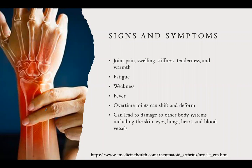Signs and symptoms include joint pain, swelling, stiffness, tenderness, and warmth to the touch. It's also associated with fatigue, weakness, and sometimes fever, since it is an autoimmune response. Over time, joints can shift and deform, causing pain because the bones are out of alignment. This can also lead to damage to other body systems including the skin, eyes, lungs, heart, and blood vessels, due to inflammation of tissues and organs.